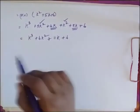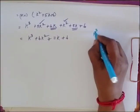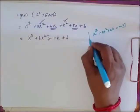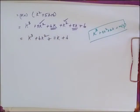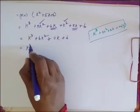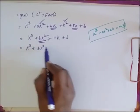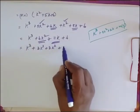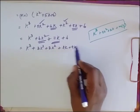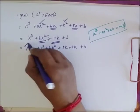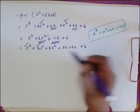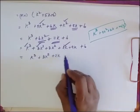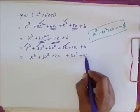Now, I already have K³ + 3K² + 2K equal to some multiple of 6. I am going to use this. So I split 6K² as 3K² + 3K², and I split 11K as 2K + 9K, and place the 6 here. Bringing K³ + 3K² + 2K together, the remaining terms are 3K² + 9K + 6.